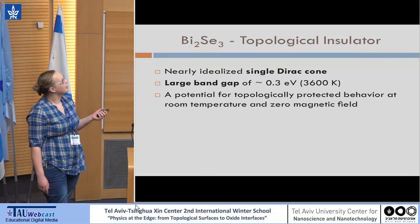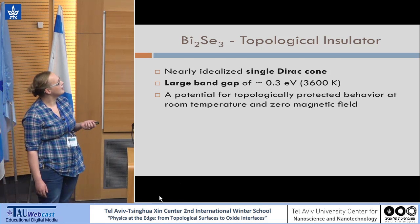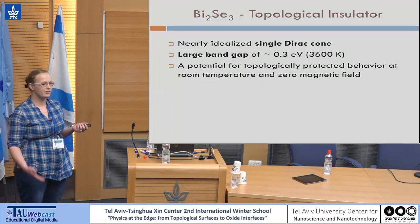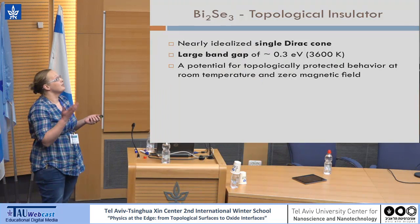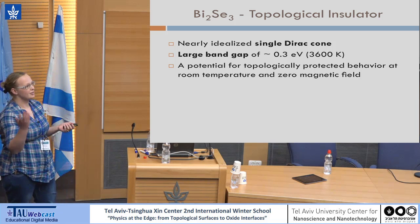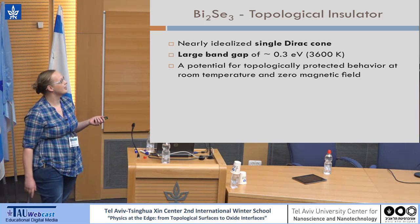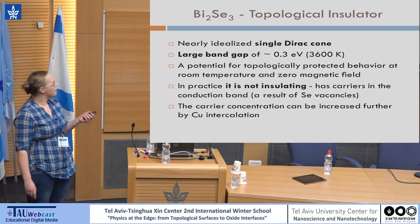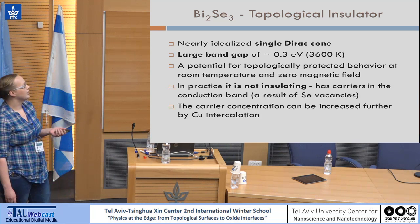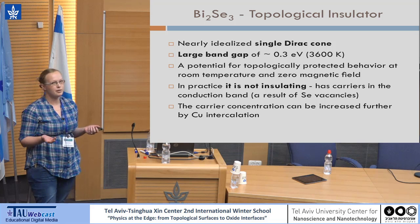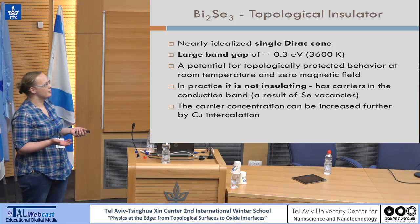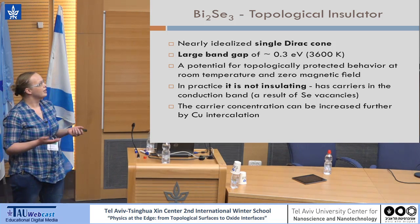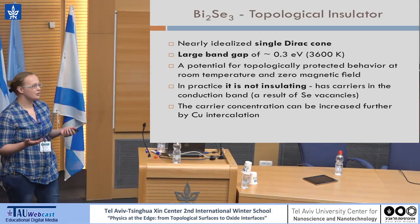Very briefly on bismuth selenide, which was just mentioned in the previous talk: it has a nearly ideal single Dirac cone and a relatively large bandgap — quite small for a semiconductor — but it allows the Dirac cone to persist to room temperatures in principle. In reality, when you prepare this material in the lab, it is very nearly impossible to make it completely insulating in the bulk, so you end up with a bulk contribution to the conductivity.